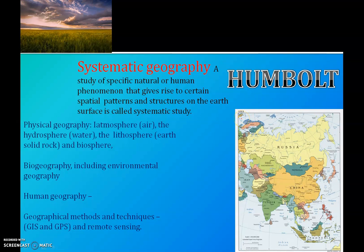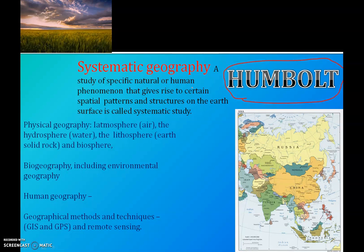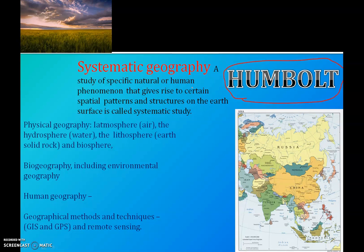Systematic geography was introduced by Alexander von Humboldt. In systematic geography, the study of particular elements in geography — such as agriculture, region or area, settlement — seeks to understand the processes which influence it and the spatial pattern. It studies an issue and looks at its spatial variation in all parts of the globe.